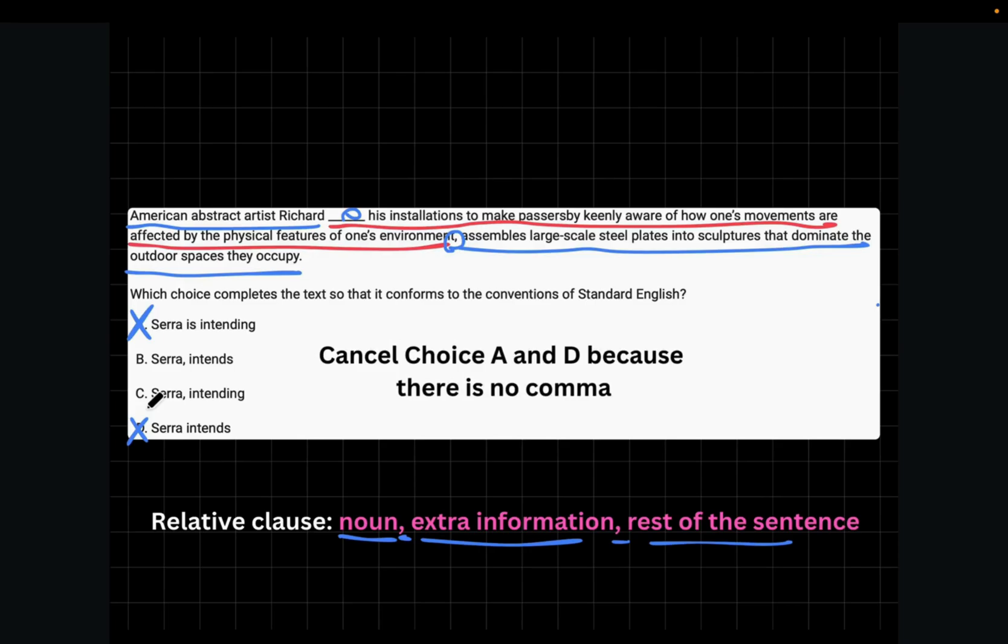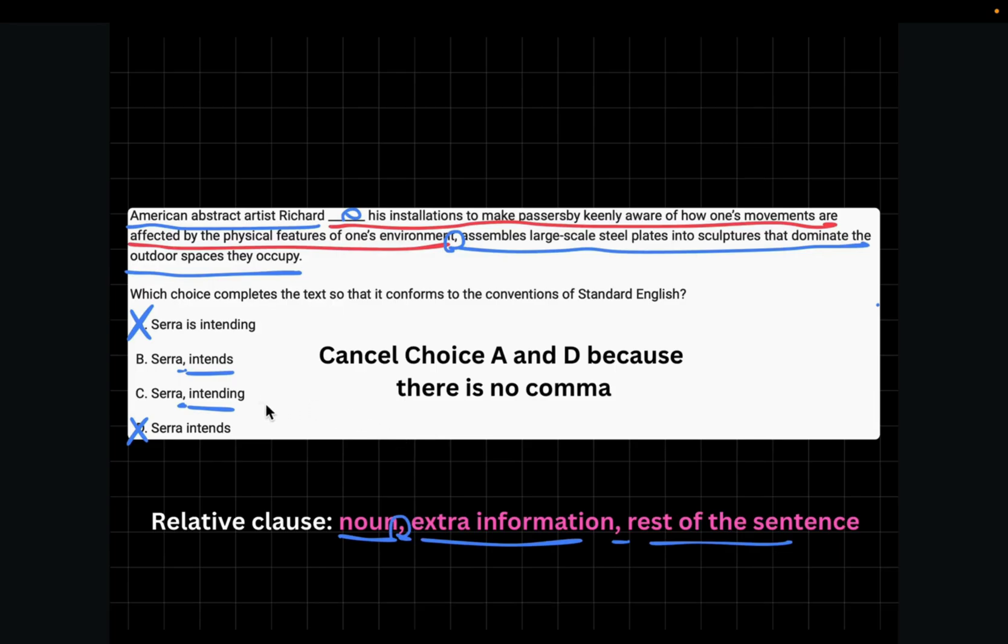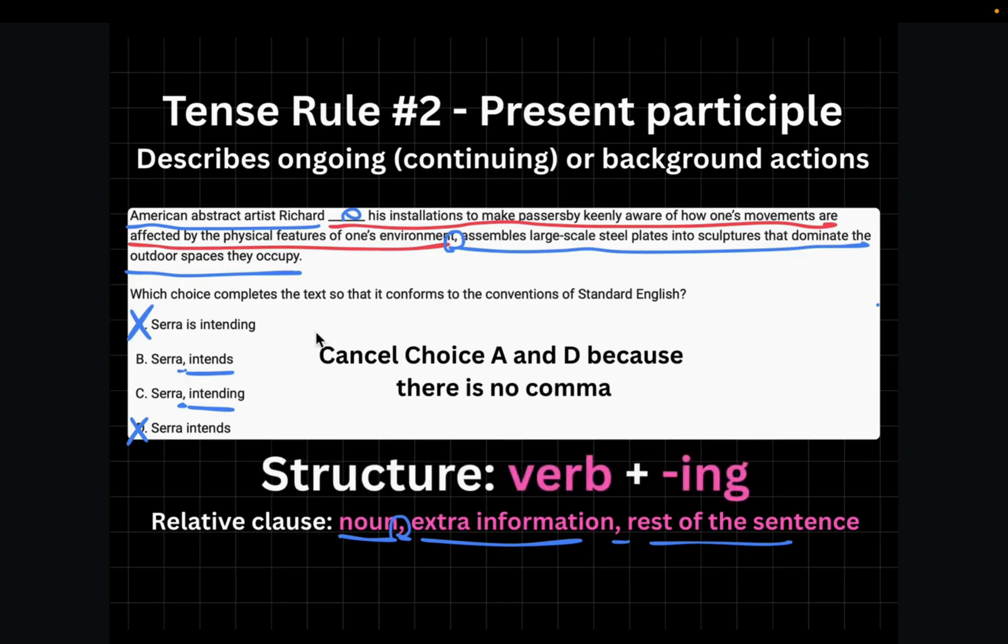So now we're left with choice B and C. After the comma, they both have a verb, which means that the verb came after the first comma in the relative clause questions. And 99% of the time, when this happens, we will use the second verb tense rule, which is present participle. Present participle describes ongoing or background actions. So this middle part is just a background action. That's why we're supposed to use the present participle choice. And present participle is composed of a verb and ing. In this case, that would mean choice C would be correct. Also, present participle usually comes in the form of a relative clause or after a comma.